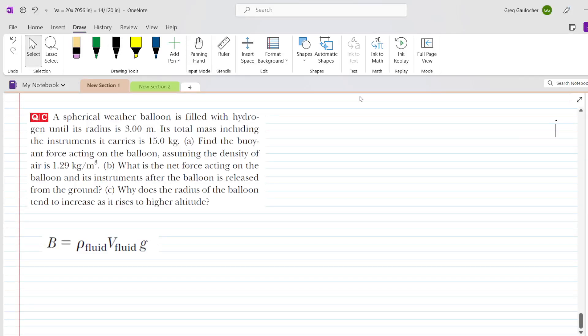In this question we have a spherical weather balloon filled with hydrogen and immersed in air, and part A wants us to find the buoyant force acting on the balloon.